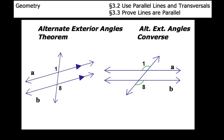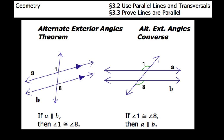Next, the alternate exterior angles theorem and the alternate exterior angles converse. If two parallel lines are cut by a transversal, then the alternate exterior angles are going to be congruent. Whereas for the alternate exterior angles converse, if two lines are cut by a transversal so that alternate exterior angles are congruent, then we conclude the lines are going to be parallel. So in this case, if angle 1 is congruent to angle 8, then line A is parallel to line B. Again, 1 and 8 aren't the only pair of alternate exterior angles, but they're the ones shown in our diagram.